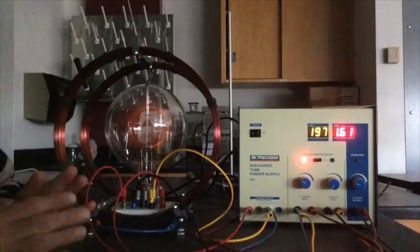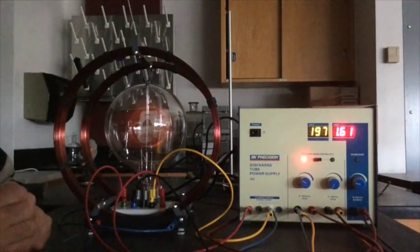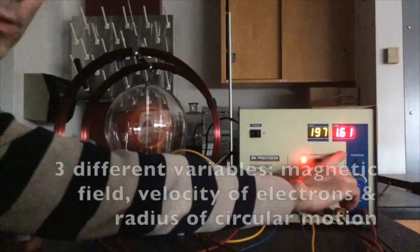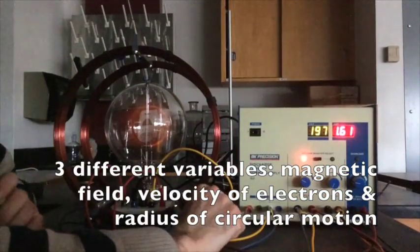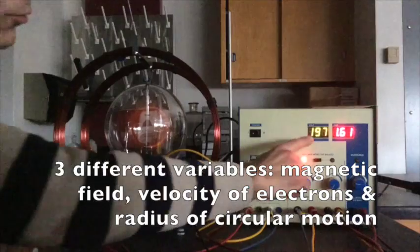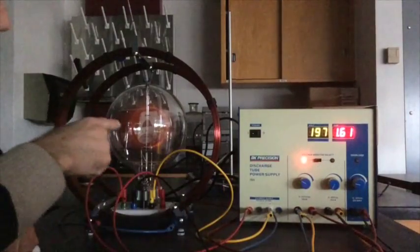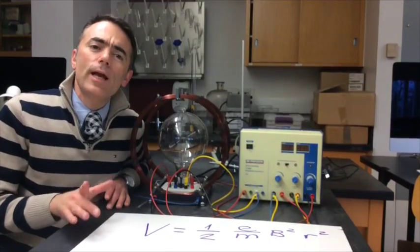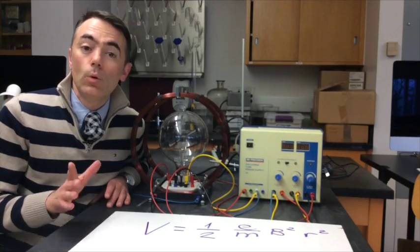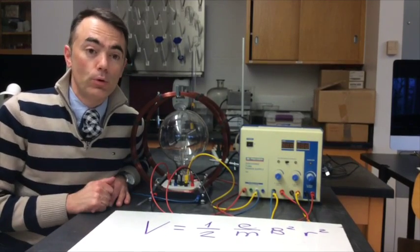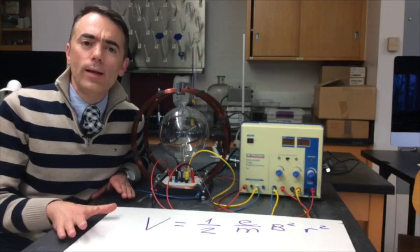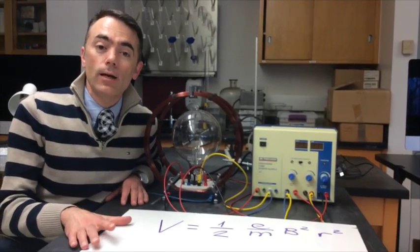In this experiment, you are going to play with three different variables: the magnetic field, controlled with the current, the velocity of the electrons, controlled with the voltage, and the radius. Follow all the checkpoint points and answer all the questions in your report. Don't forget to write everything down, and may the signs be with you.